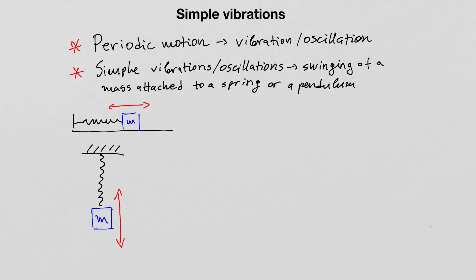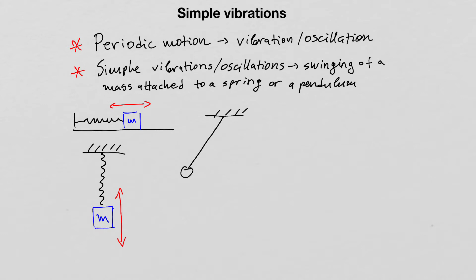The example with a pendulum is similar to the mass hanging on the spring, except the oscillations are in a different plane of motion. A pendulum is simply a string with a bob attached to its free end — the bob has mass, and its motion is along an arc, oscillating back and forth.